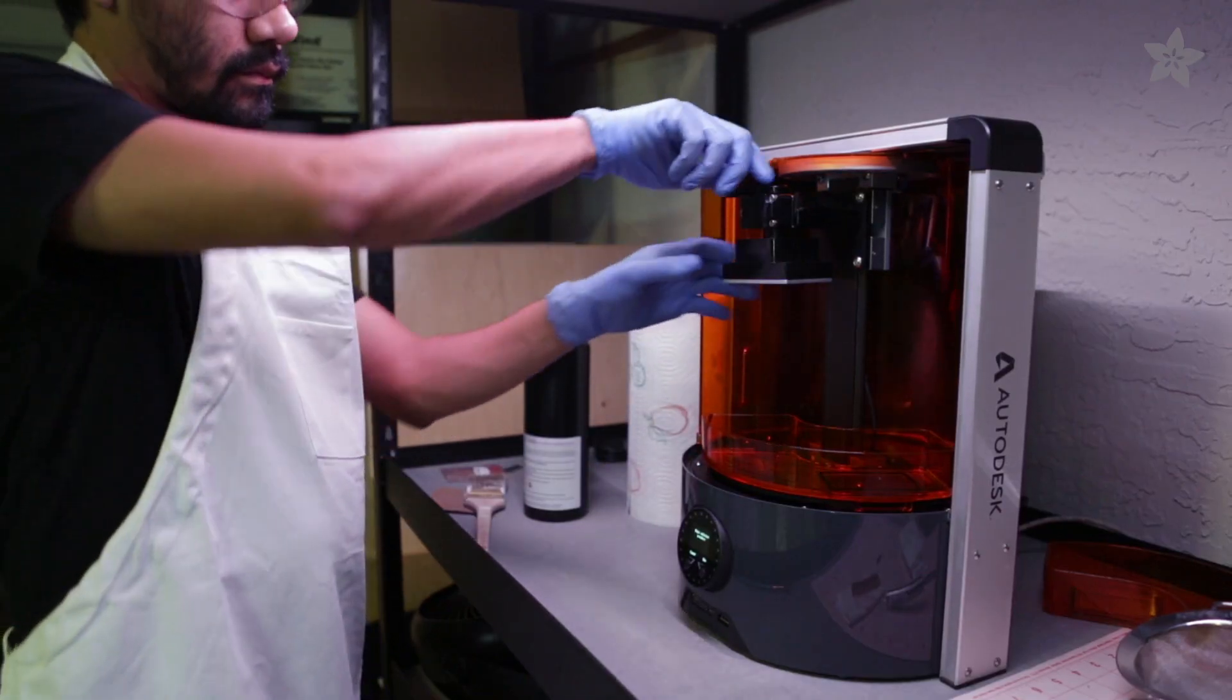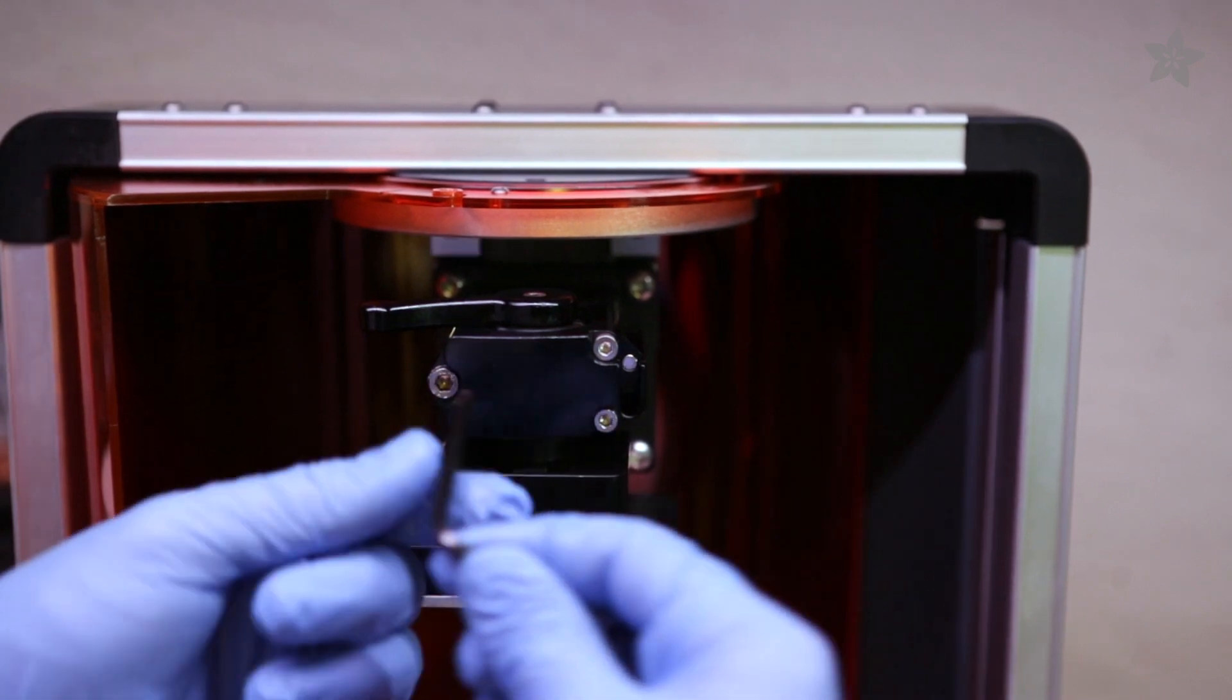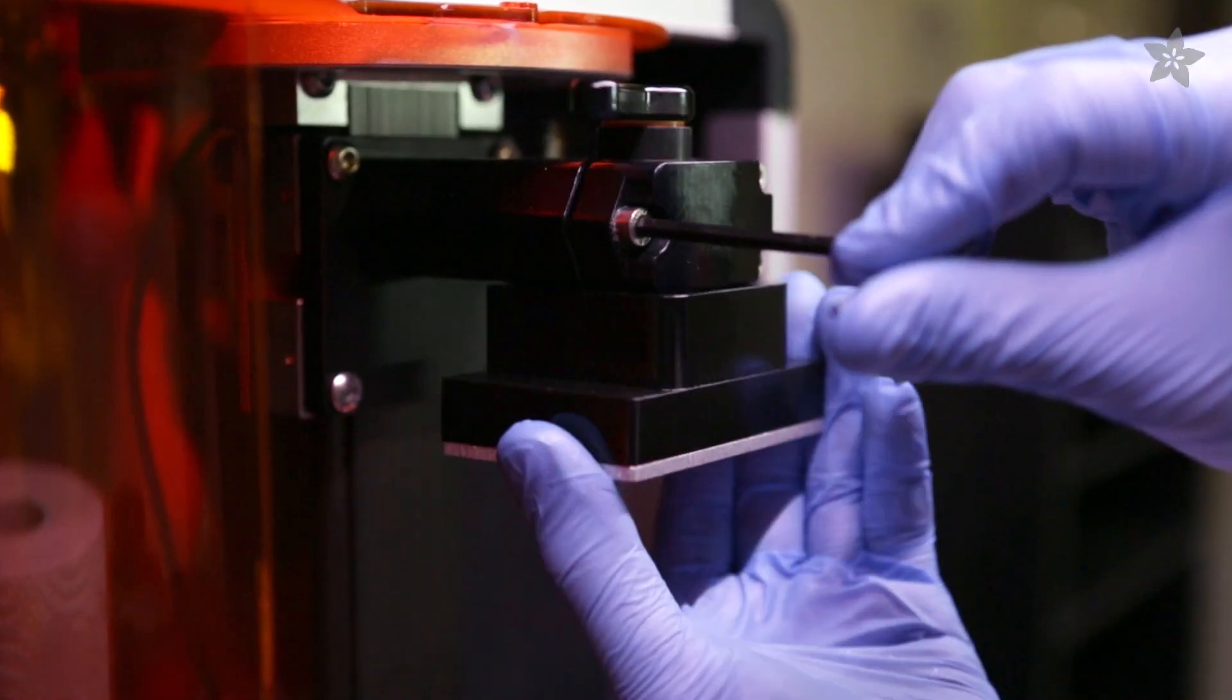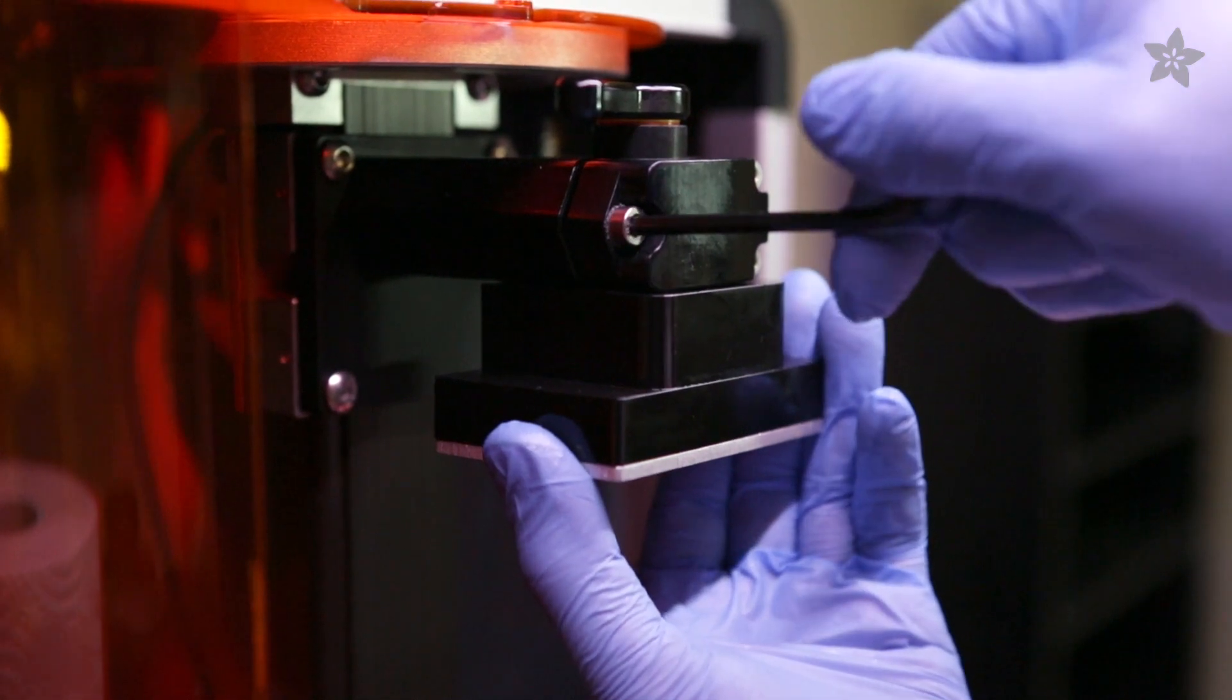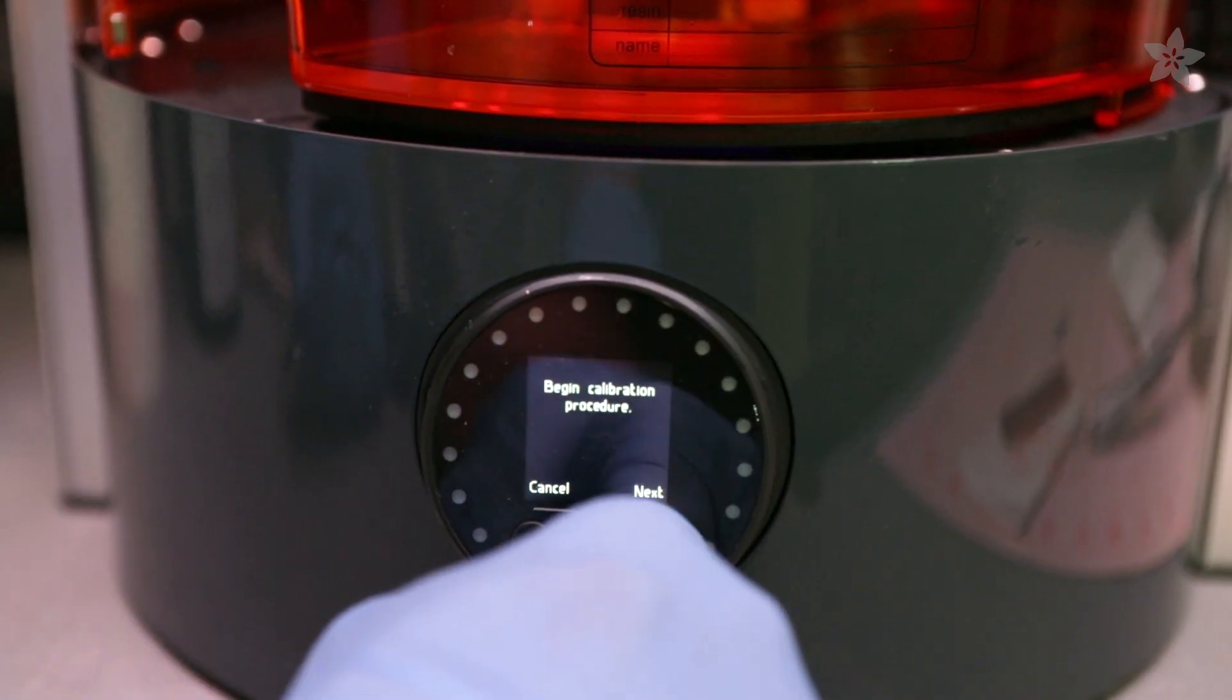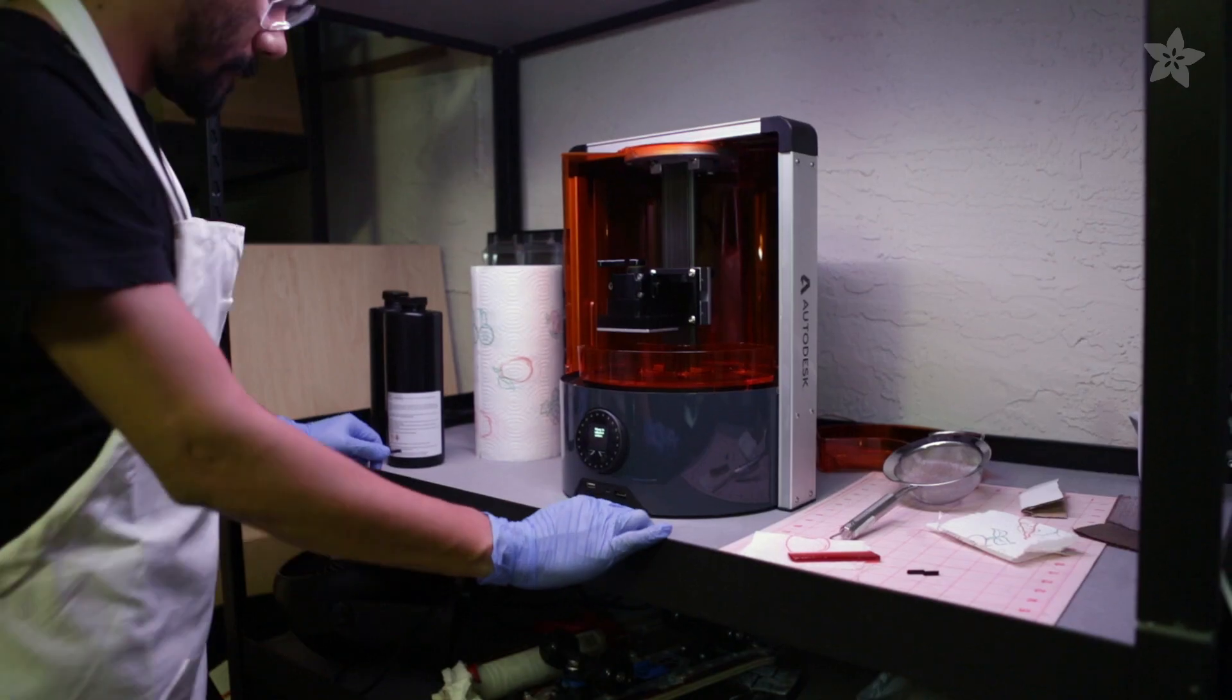Let's take a look at the leveling procedures. We're going to need to re-level the build head before starting a new job, mainly because it misaligns after removal. We can start by loosening up the build head and moving it up. Then we'll initiate the leveling process. It'll start homing the build plate down until it reaches the resin tank window.